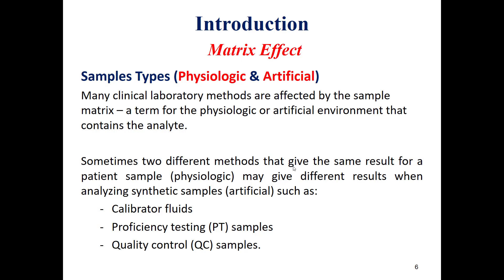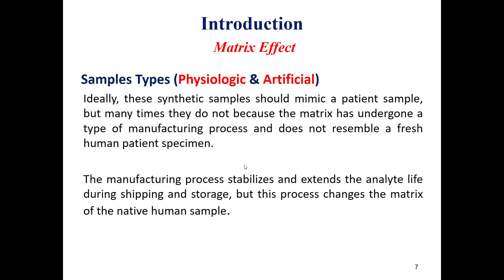Sometimes two different methods that give the same result for a patient sample may give different results when analyzing synthetic samples such as calibrators, proficiency testing, and quality control samples. These synthetic samples should mimic the patient sample; however, many times they do not because the matrix has undergone a manufacturing process and does not resemble a fresh human patient specimen. The manufacturing process aims to stabilize and extend analyte life during shipping and storage, but this process changes the matrix of the native human sample.